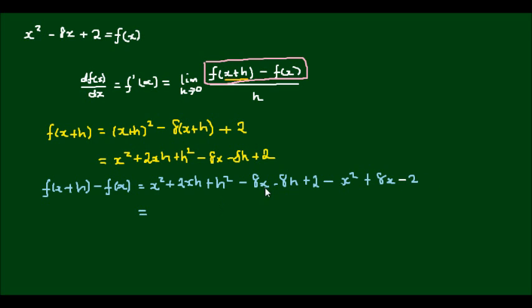Now if I tidy this expression up, I'll see that x squared will cancel out with minus x squared, minus 8x will cancel out with positive 8x, positive 2 will cancel out with negative 2.